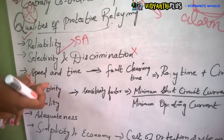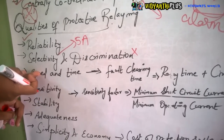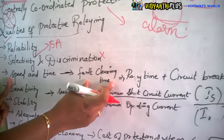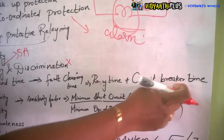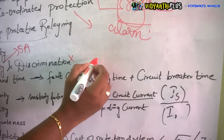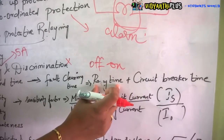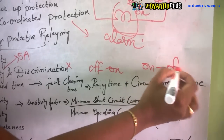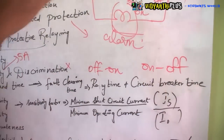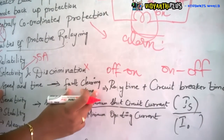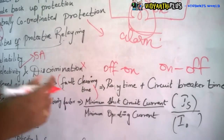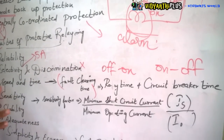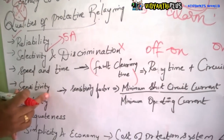The third quality is speed and time. Immediately if a fault occurs, the speed of the relay operating should be very high — it should sense at a very high speed and operate quickly. The fault clearing time equals relay operating time plus circuit breaker time. The relay operates first, gives information to the circuit breaker, the circuit breaker isolates the faulty part, and this fault clearing time should be very low — in the order of nanoseconds.